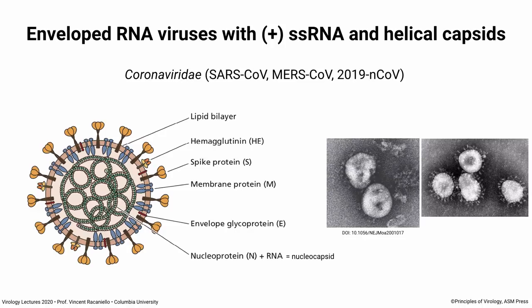When the first patients had this virus infection and the virus was isolated from them, they took electron micrographs of it. Here's one published in the New England Journal — it's not very good unfortunately. This one on the right is a better photograph but it's not of the new coronavirus. I want to show it to you because it shows how this virus got the name coronavirus. When they first saw these particles in the electron microscope, they said it looks like there's a corona around each one. You see those little spikes? Those are the spike glycoproteins. They said it looks like the corona of the sun — so they called them coronaviruses. On the left is from a patient in Wuhan. You can't see the spikes very well, but they're there. These are enveloped viruses with helical nucleocapsids.